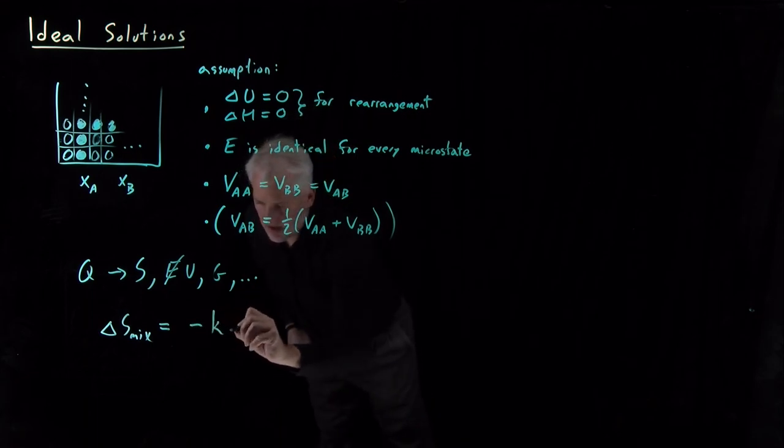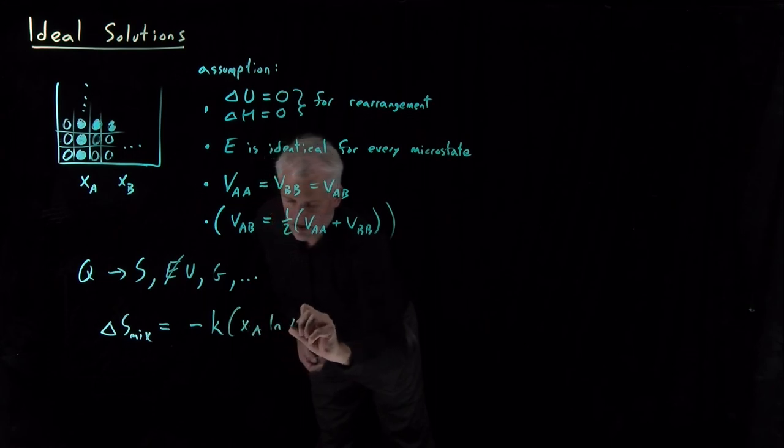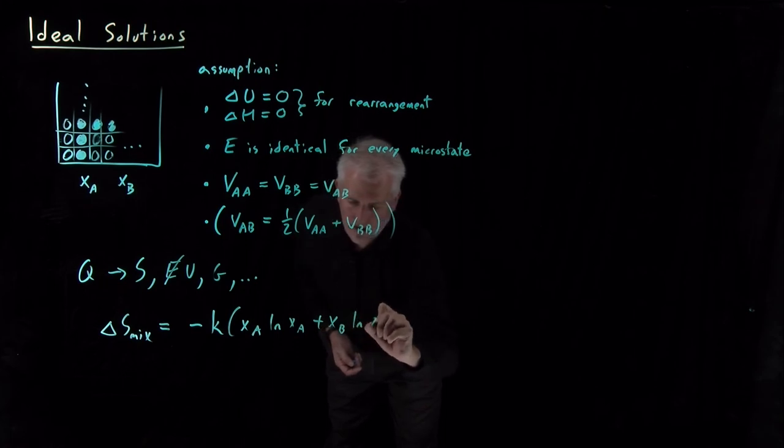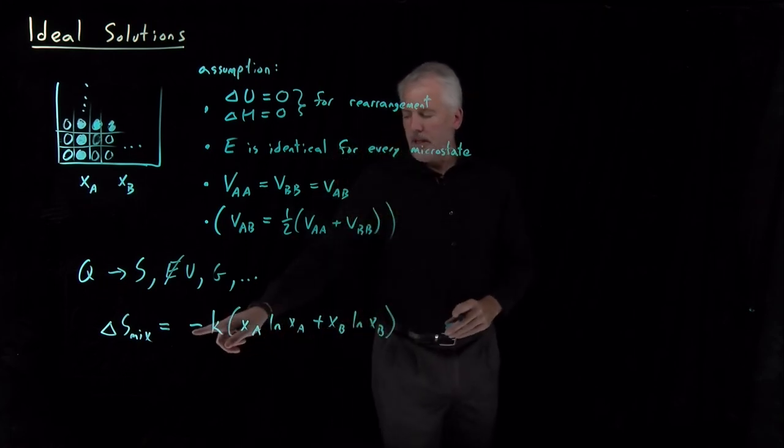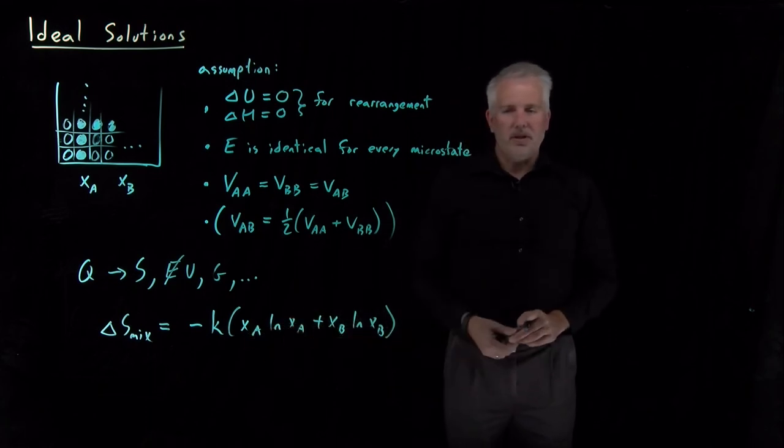for this two-component solution, negative Boltzmann's constant times mole fraction log mole fraction summed up over each of the two different components in that solution.